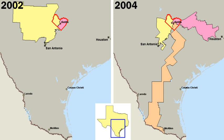The judiciary's function is to interpret the United States Constitution and federal laws and regulations. This includes resolving disputes between the executive and legislative branches. The federal government's structure is codified in the Constitution.